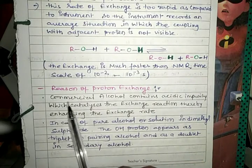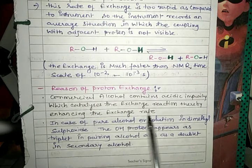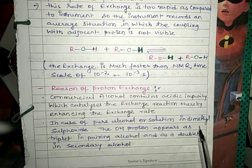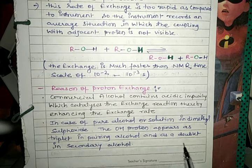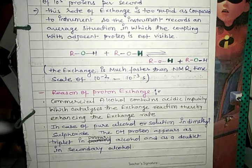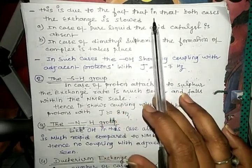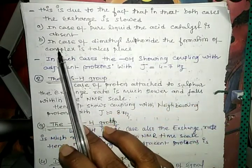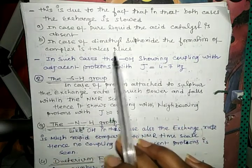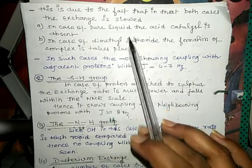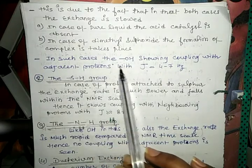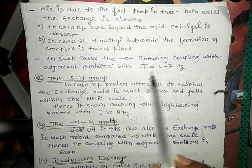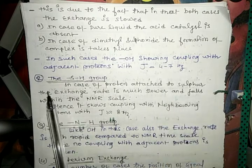The reason for proton exchange: commercial alcohol contains acidic impurities which catalyze the exchange reaction, thereby enhancing the exchange rate. In the case of pure alcohol or solution in dimethyl sulfoxide (DMSO), the OH proton appears as a triplet in primary alcohol and as a doublet in secondary alcohol. This is because exchange is slow in both cases — in pure liquid the acid catalyst is absent, and in DMSO complex formation takes place. In such cases, OH coupling with the adjacent proton gives J equal to 4 to 7 Hz.